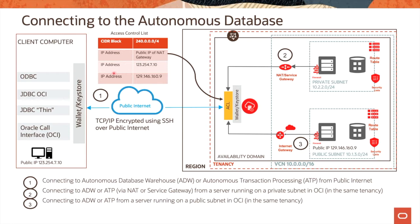If the IP address matches one of the entries, the connection goes through. Additionally, the user needs to have the wallet along with a valid user ID and password to access the autonomous database. Security is quite robust when it comes to accessing autonomous database.